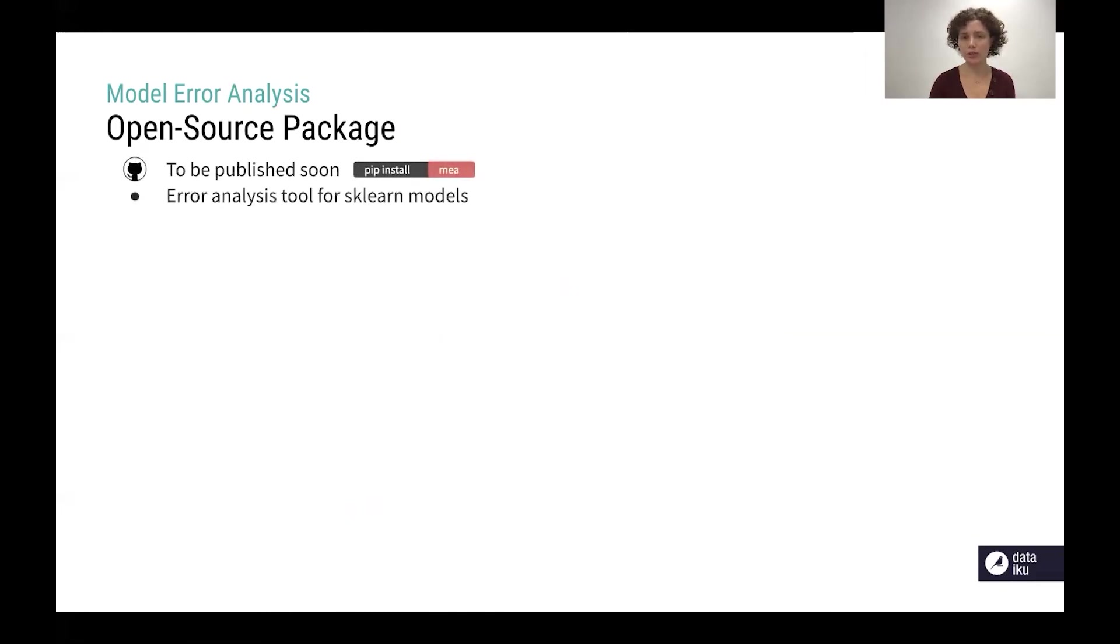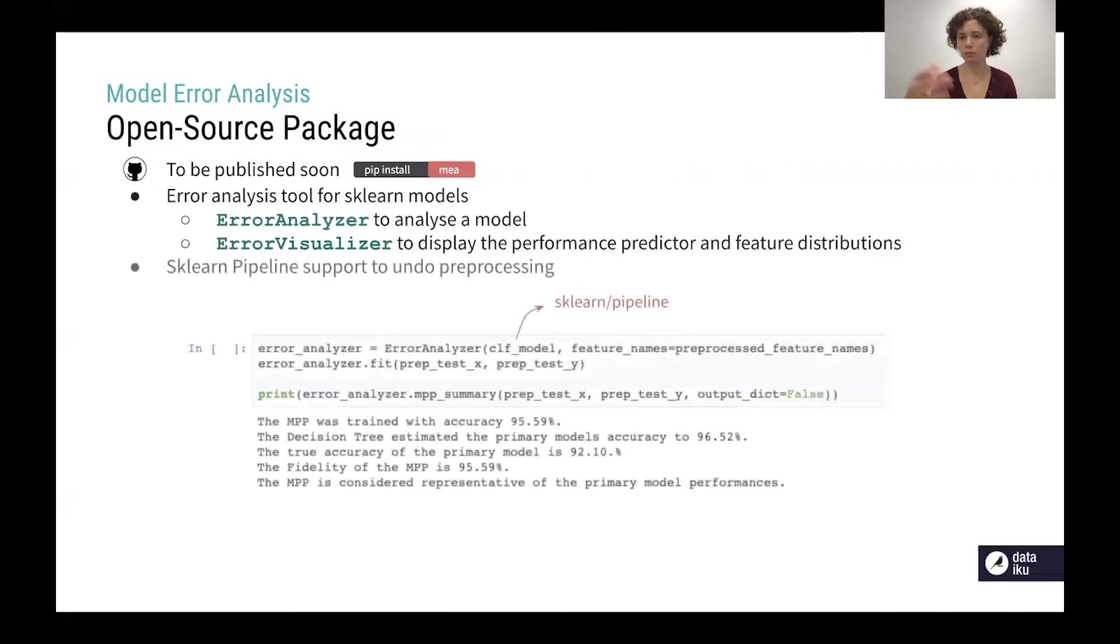Now it's time to connect the dots and put all together. If you are interested in model error analysis you can perform this procedure I explained in this presentation but you can also use an open source package that we are publishing soon that provides an error analysis tool for sklearn models and it also supports pipeline models. It provides an error analyzer to analyze the model and train a model performance predictor and also an error visualizer to display the performance predictor tree and feature distributions.